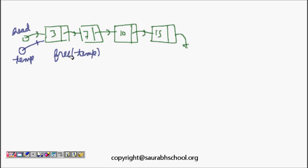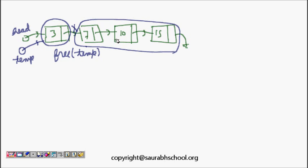If I try to delete the first node and free it, that pointer is also gone and I don't have access to the rest. Head was pointing to the start; I freed temp and there's nothing left. All the remaining nodes stay intact in memory but we have no access to them because we don't have any link. So it's very important to understand that one variable won't work — whenever we delete something, we should have the pointer to the next element.